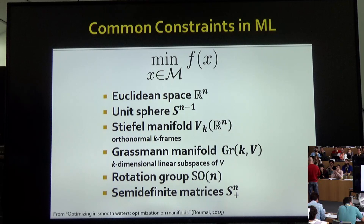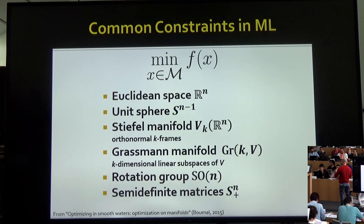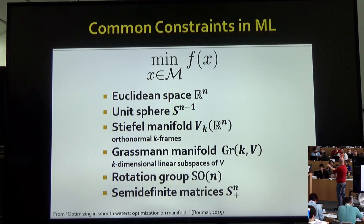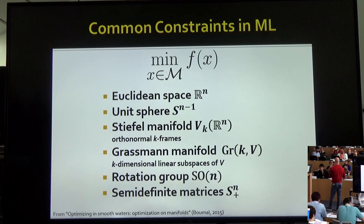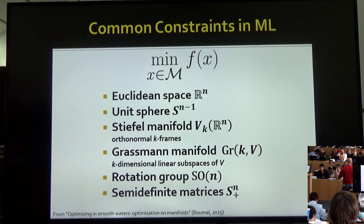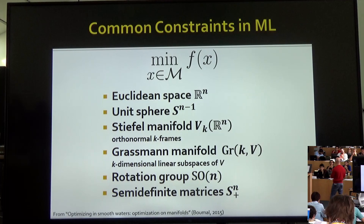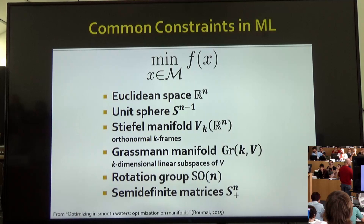A similar manifold is the Grassmann manifold, the space of linear subspaces. In computer vision, it's very common to search for the motion or position of a camera — you need to find its location and the direction it's pointing, which may be a rotation. The space of rotations is the rotation group SO(n). A common scenario is to set up your favorite loss function with variables in some complicated space and try to optimize, hoping what comes out is a useful solution.